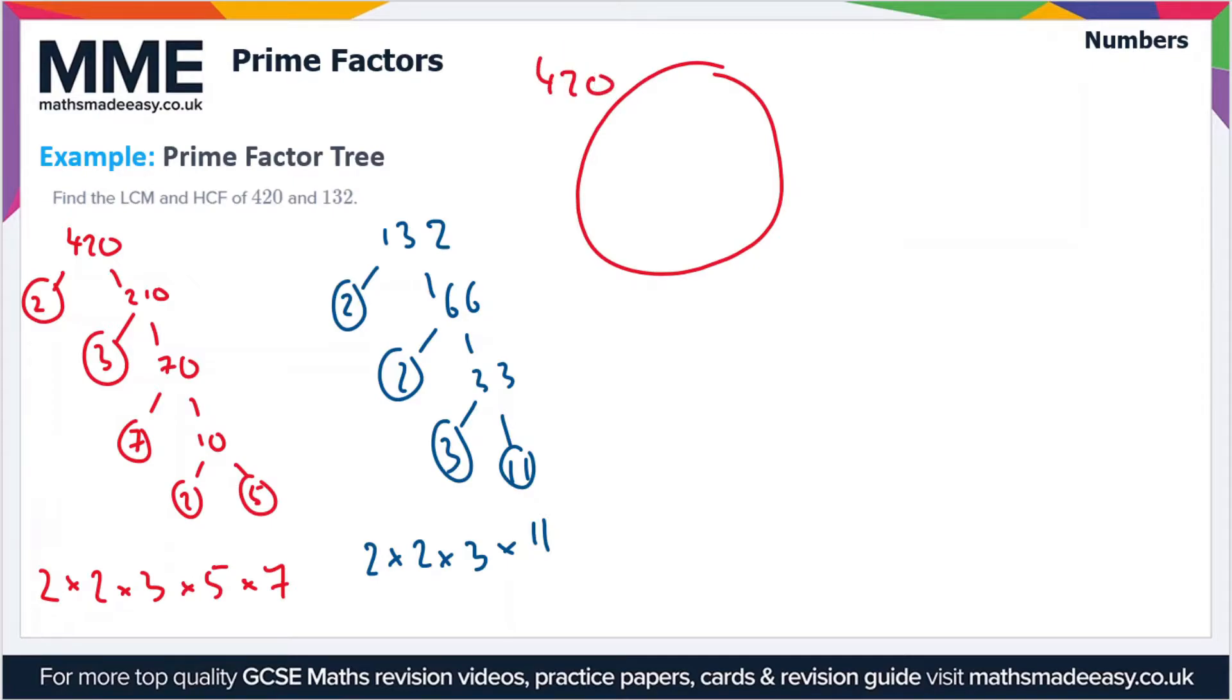We've got the factors of 420 in this circle and the factors of 132 in this circle. Let's start with the factors of 420. We've got 2. Anytime a number appears in the prime factorization of both numbers, we're going to write it in the intersection. There's a 2 in both lists, so we'll write a 2 in the intersection and cross them from both lists.